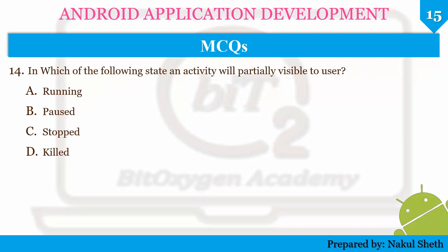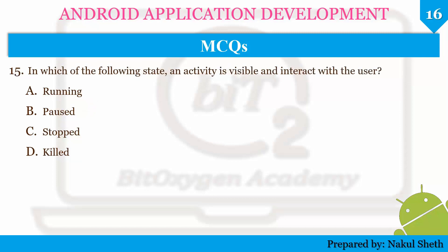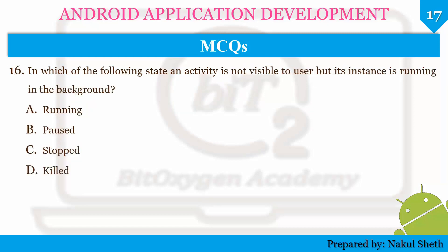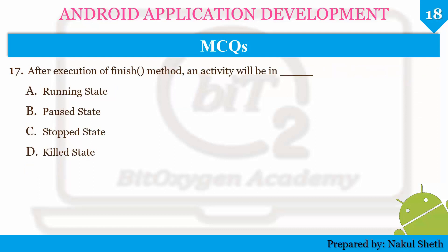Next question: in which of the following states is an activity partially visible to the user? The options are Running, Paused, Stopped, or Killed. The correct answer is Paused. Next question: in which state is an activity visible and interacting with the user? The answer is Running state. Next question: in which state is an activity not visible to the user but its instance is still running in the background? The correct answer is Stopped state.